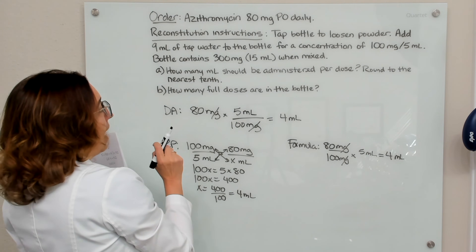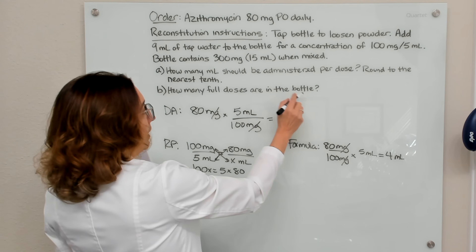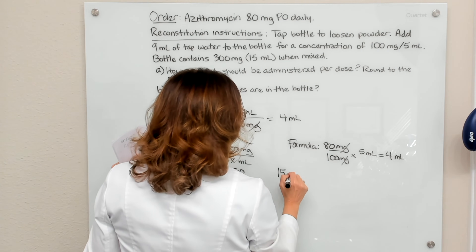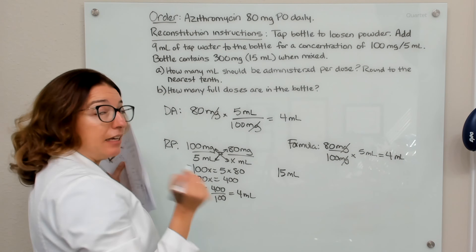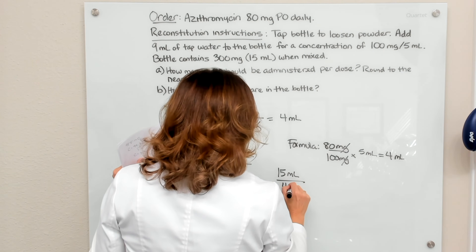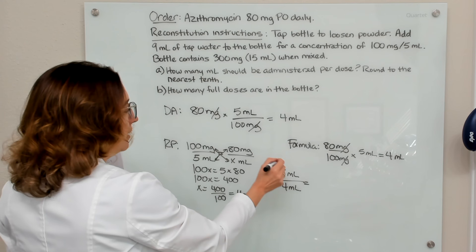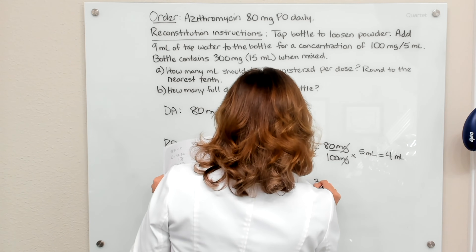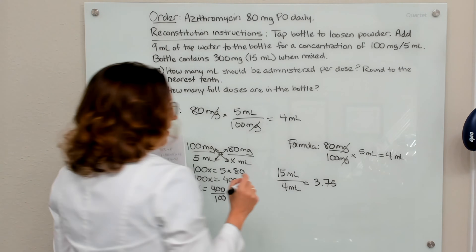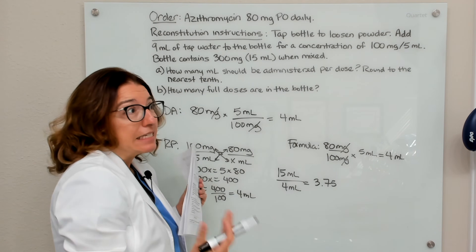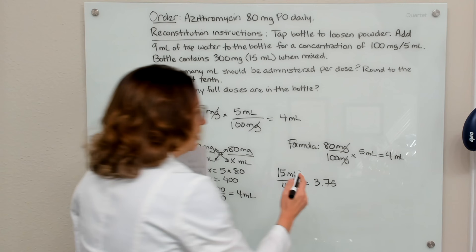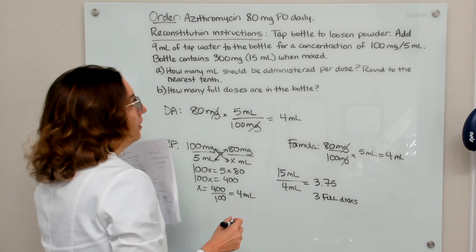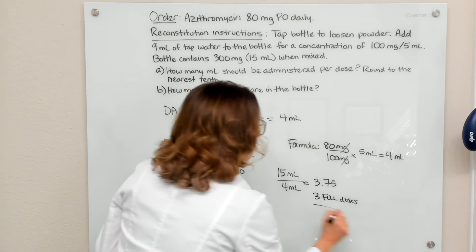Now we have to figure out how many full doses are in the bottle. According to the information, there are 15 mLs in a bottle, and with each dose we are giving 4 mLs. So we divide 15 mL by 4 mL to figure out how many doses are in the bottle. We end up with 3.75. Since we can't give 0.75 of a dose, there are three full doses that we can give the patient from this bottle. That is the answer to Part B.